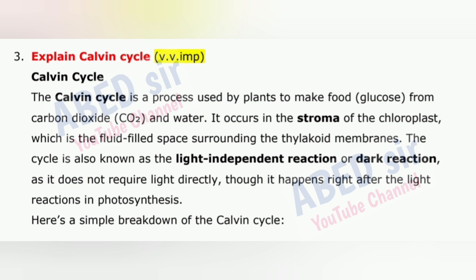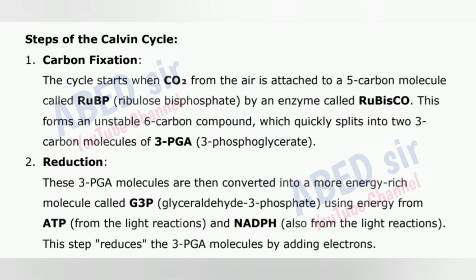Here is a simple breakdown of the Calvin Cycle. Steps: 1. Carbon Fixation – the cycle starts when CO₂ from the air is attached to a 5-carbon molecule called RuBP (ribulose bisphosphate) by an enzyme called RuBisCO. This forms an unstable 6-carbon compound, which quickly splits into two 3-carbon molecules of 3-PGA (3-phosphoglycerate).